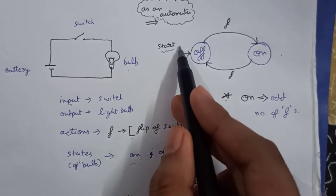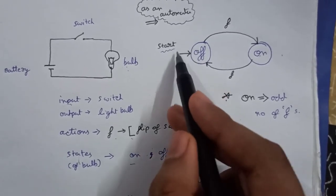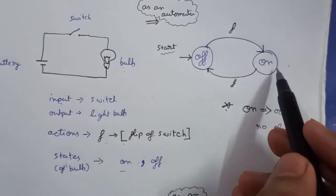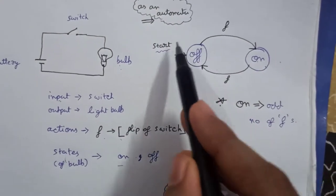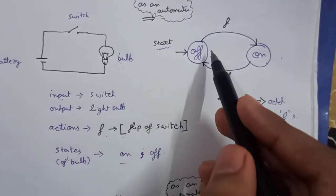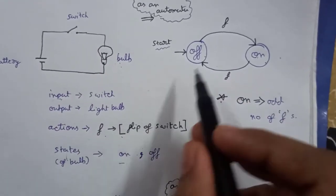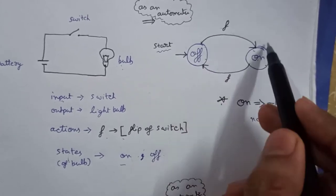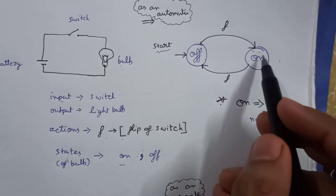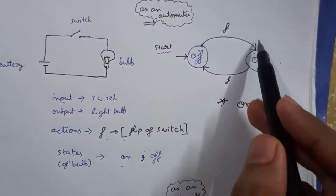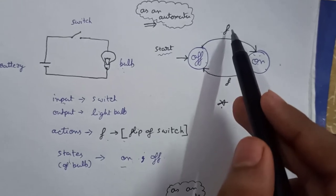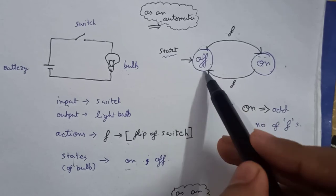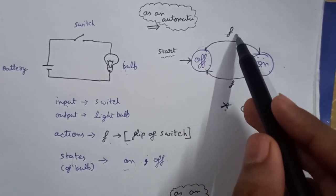To mark a state of an automata as the starting point, we use an arrow to indicate that this is the starting state. If the state is already off — that is, the bulb is off — and we flip the switch once, it goes from off to on, meaning the bulb turns on. The arrow goes from off to on, and above the arrow we write 'f', which is the input or action.